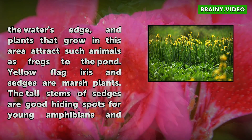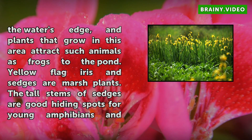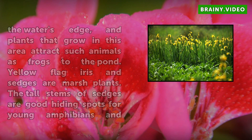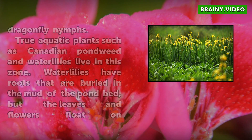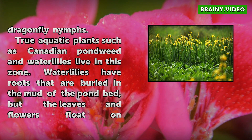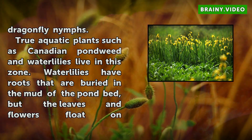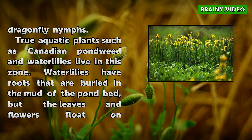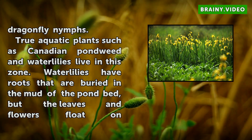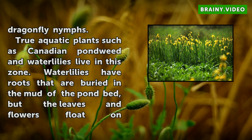True aquatic plants such as Canadian pondweed and water lilies live in this zone. Water lilies have roots that are buried in the mud of the pond bed, but the leaves and flowers float on the surface. Other plants such as duckweed are surface floaters, with roots that dangle down into the water.